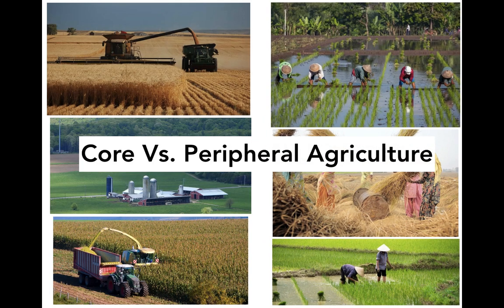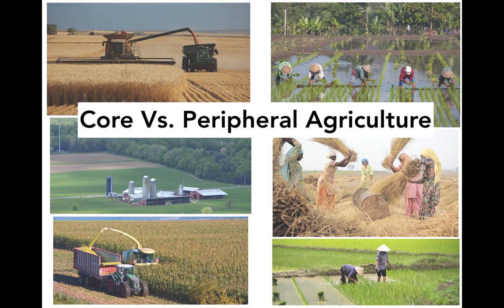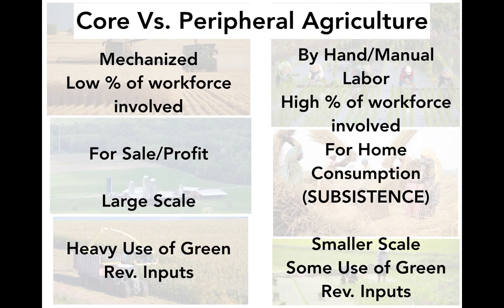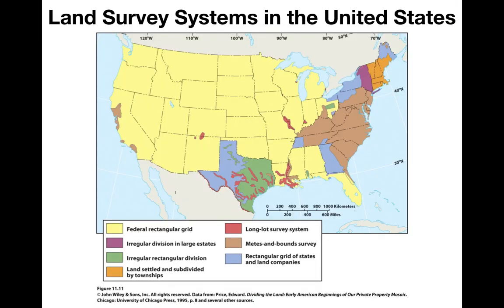In contrasting core versus peripheral agriculture, core agriculture is heavily mechanized with only a low percentage of the total workforce involved in agriculture. It is done for sale and profit, at a large scale, with heavy use of green revolution inputs such as pesticides and fertilizer. In contrast, peripheral agriculture is done by hand with a high percentage of the workforce involved. It is done for home consumption — subsistence — at a smaller scale with only some use of green revolution inputs.